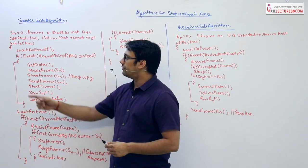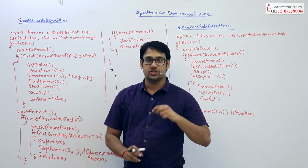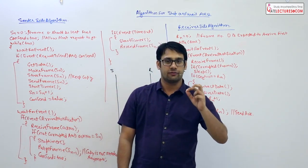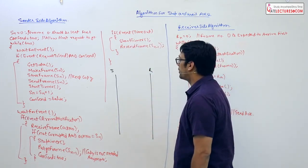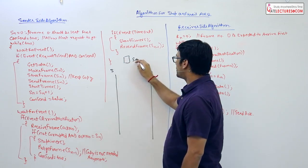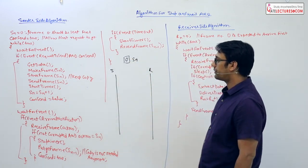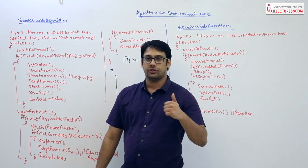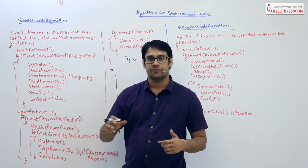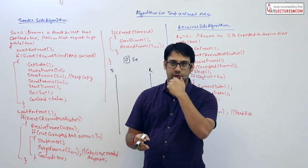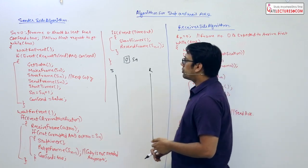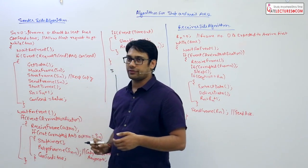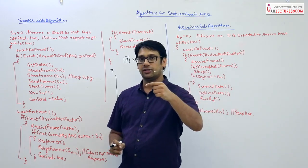At the sender side we set SN equal to zero, meaning the very first frame we send will have sequence number zero. We also set can_send equal to true, meaning for the first data packet we allow it to be sent. For subsequent data packets we will put conditions on whether to allow them to send or not.